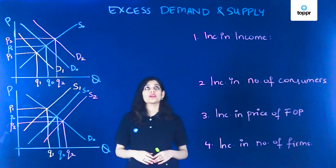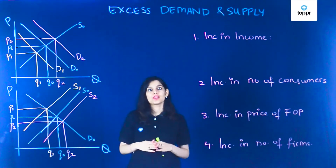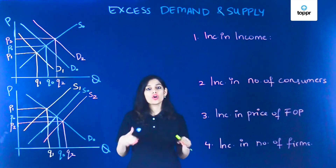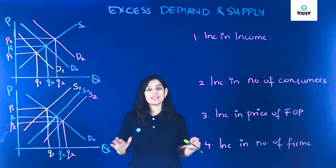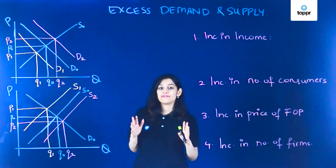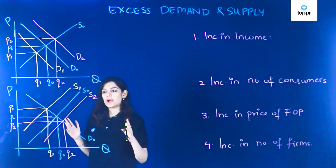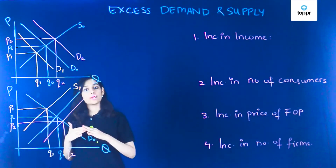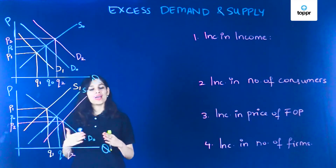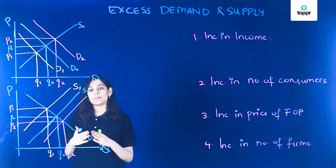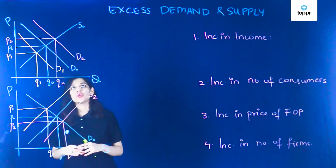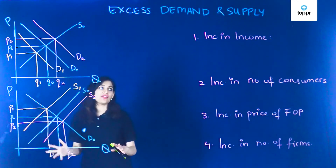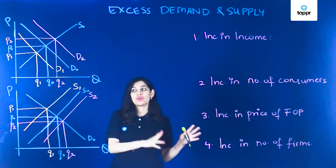In this video we are going to discuss what excess demand and excess supply mean. In all the other videos of this chapter we have assumed that things other than price are all constant. In this video that assumption is no longer valid, and we are going to take a look at how, by removing this assumption, changes in demand move the demand curve completely left or right, and how changes in supply move the supply curve left or right completely.